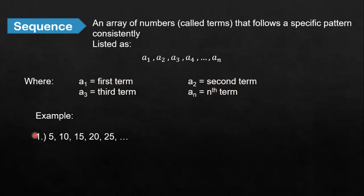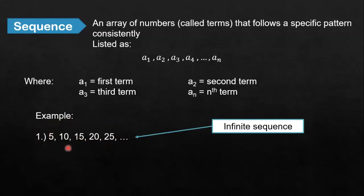For example, we have 5, 10, 15, 20, 25... In this first example, we can see that the ellipses are at the end, meaning it continues infinitely and we cannot count the exact number of terms of this sequence. So this kind of sequence is what we call an infinite sequence, simply because its terms are infinite.